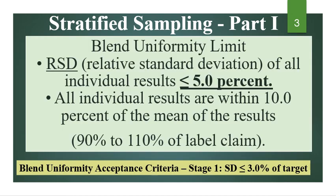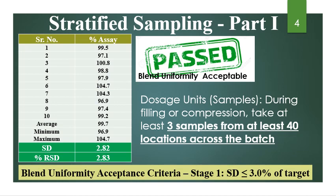The blend uniformity limit is: relative standard deviation of all individual values less than or equal to 5%, and all individual results within 10% of the mean — that is 90 to 110% of the label claim. The blend uniformity acceptance criteria as per Stage 1 is a standard deviation of less than or equal to 3% of the target. For example, with samples taken in triplicate and Set 1 analyzed: average is 99.7, minimum is 96.9, maximum is 104.7, and standard deviation is 2.82. So you are passing the Stage 1 criteria of stratified sampling.